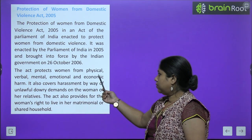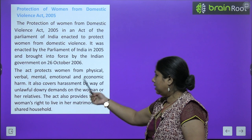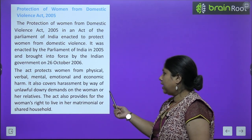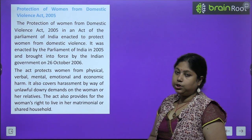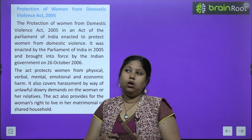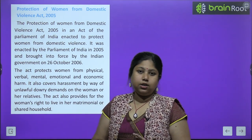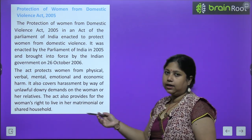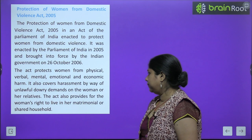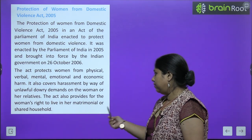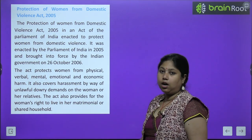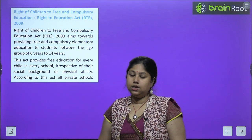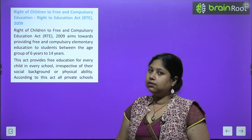The act protects women from physical, verbal, mental, emotional, and economic harm. It also covers harassment by way of unlawful dowry — many girls are tortured for dowry, some are even killed — and this act was enforced to protect them. The act also provides for women's right to live in a matrimonial or shared household. No one can misbehave with them, especially after marriage.